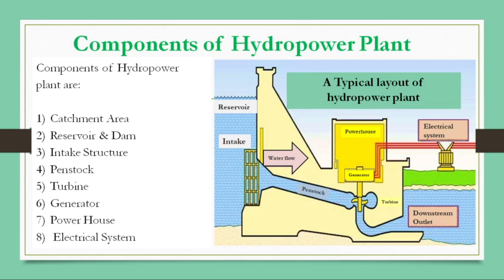Through this diagram you can see how all these components are associated with each other. The reservoir has an intake structure through which water flows through the penstock to the turbine. Attached to the turbine is a generator which generates electricity in the powerhouse, and that electricity is transmitted through the electrical system. The water after rotating the turbine moves to the downstream area through the downstream outlet.